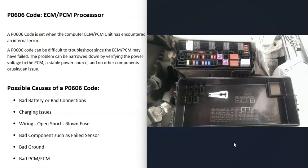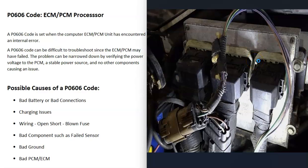All these computer modules need a good ground, or else they can get thrown off and do strange things. You can check by using a jumper wire to ground the module to the case and then jumper it to a good ground like the frame, then start the vehicle and see if the code clears. Keep in mind that a bad ground wire going to the computer modules is going to cause an issue.